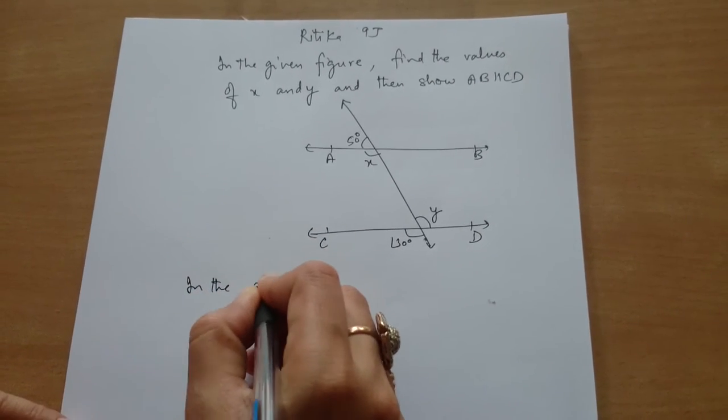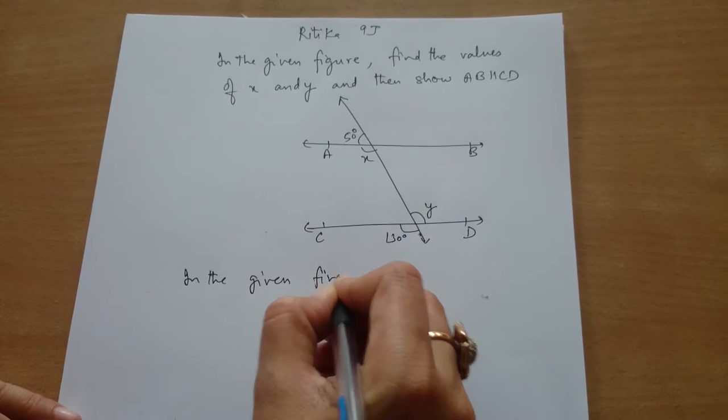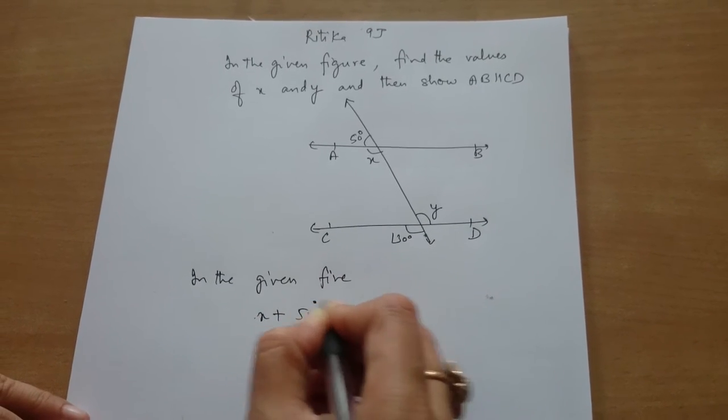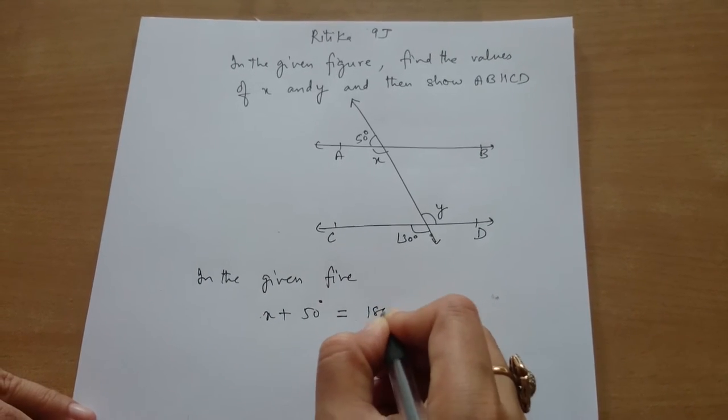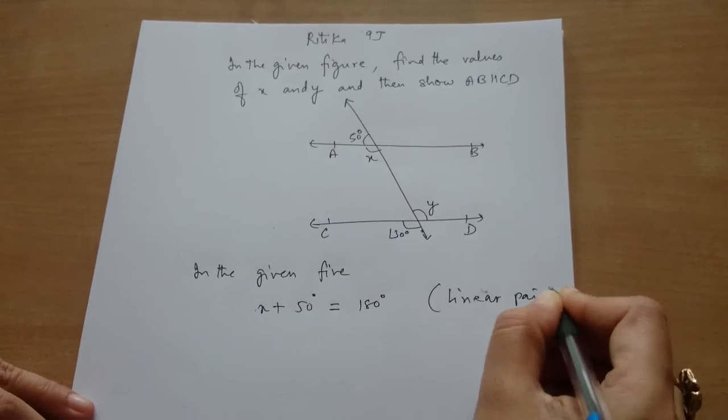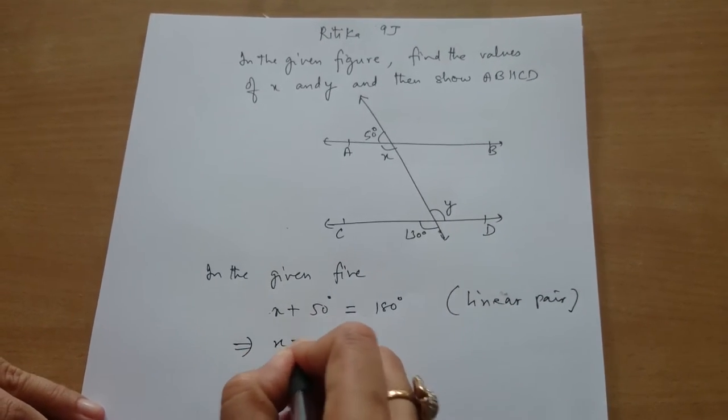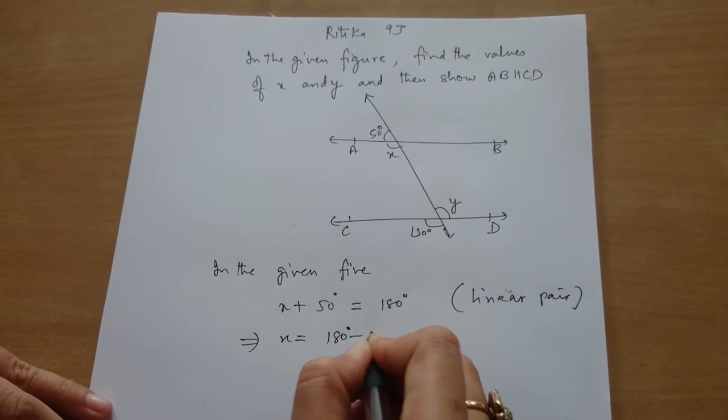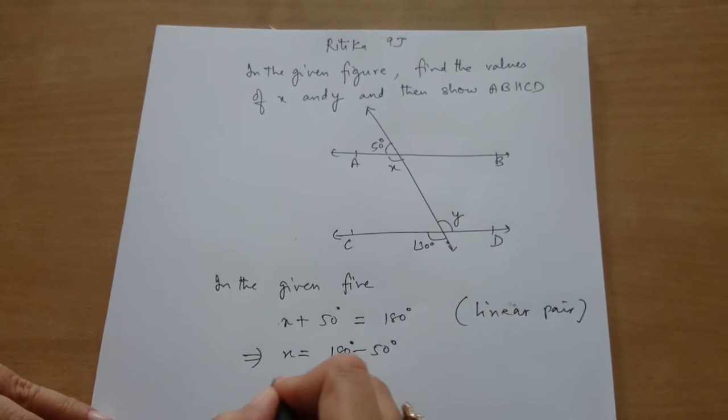In the given figure, X plus 50 degrees is equal to 180 degrees because it is a linear pair. This implies X is equal to 180 degrees minus 50 degrees, which equals 130 degrees.